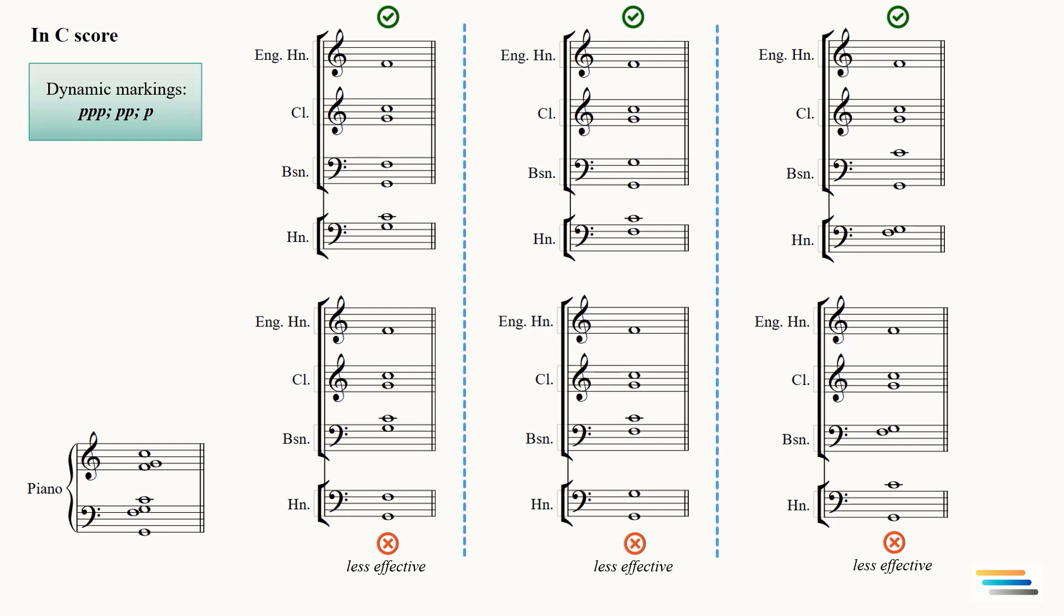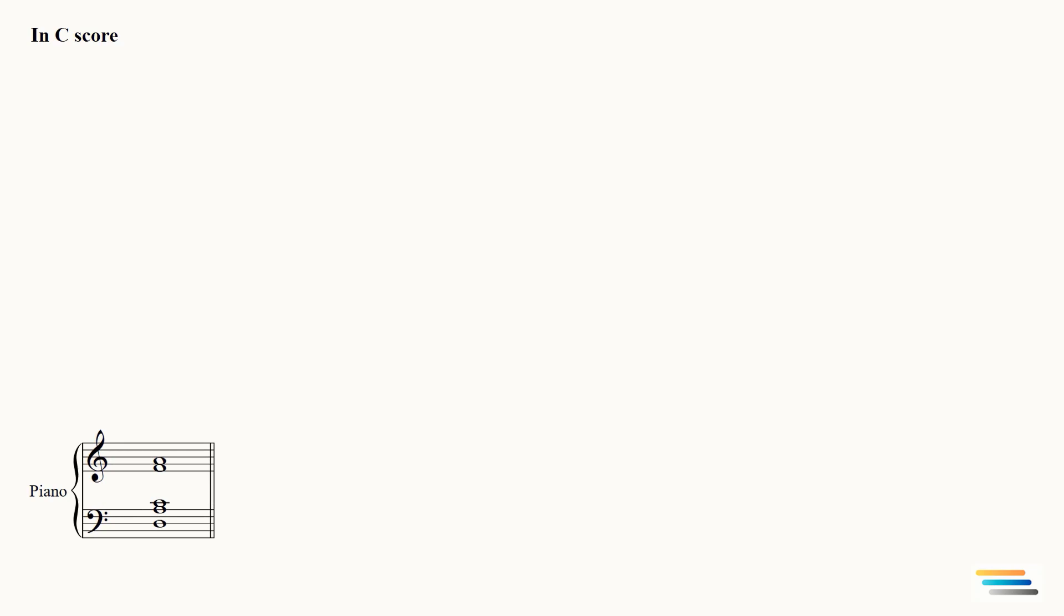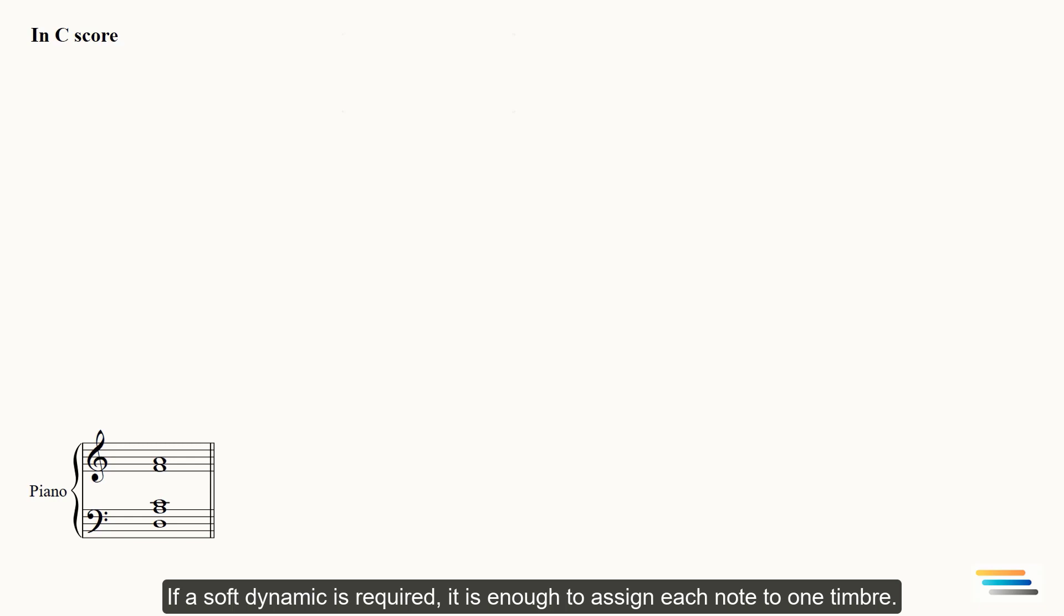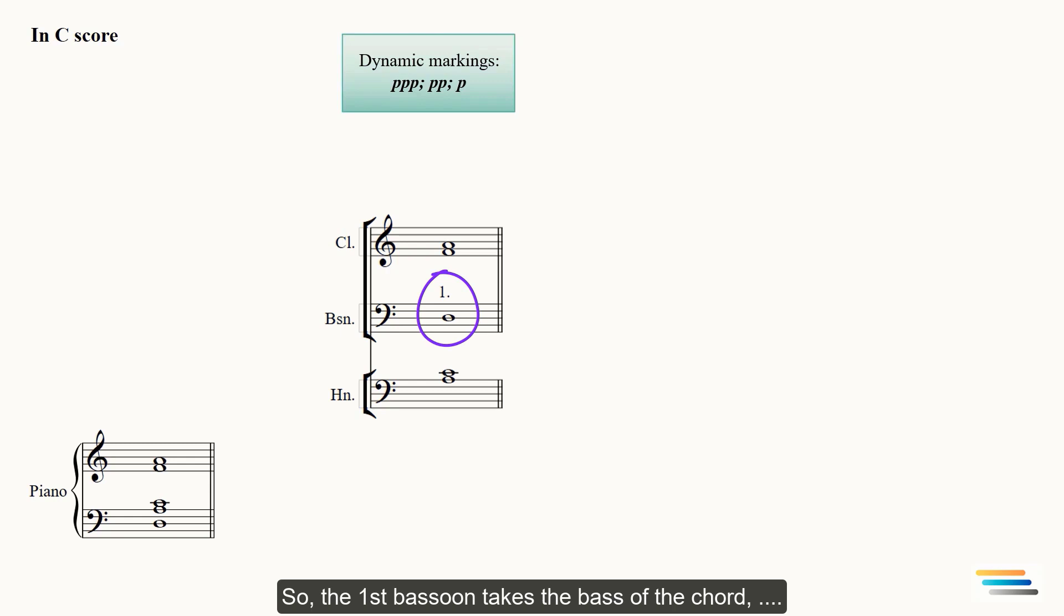Let's voice the seventh chord with both soft and strong dynamics. If a soft dynamic is required, it is enough to assign each note to one timbre. So the first bassoon takes the bass of the chord, while two horns play above the bassoon. Two clarinets will complete the upper harmony.